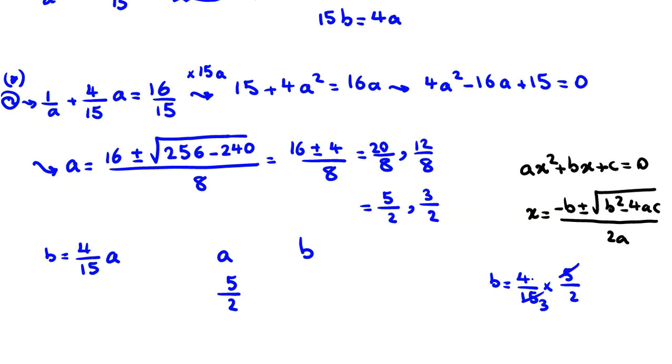So b is 4 over 15 times 5 over 2. If we cancel, it will be 2 over 3, the first one. And the next one, a is 3 over 2, and b will be 4 over 15 times 3 over 2, and if we simplify, it will be 2 over 5.